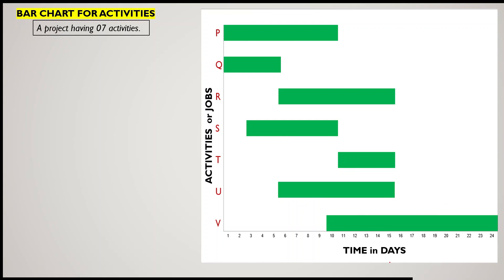In this picture you can view a bar chart. Along the x-axis we have taken time in days — how many days each activity will take to complete. Along the y-axis there are activities, also called jobs. This particular small project has seven activities: P, Q, R, S, T, U, and V.